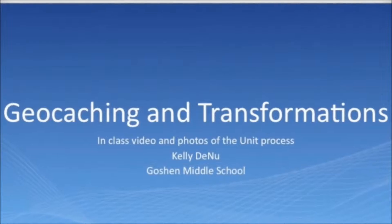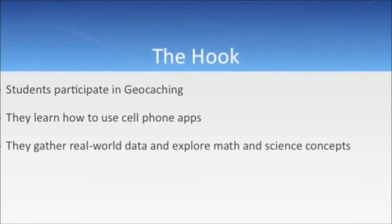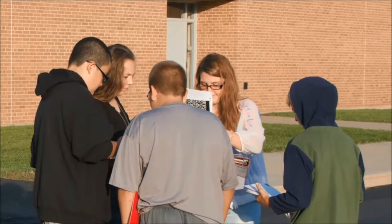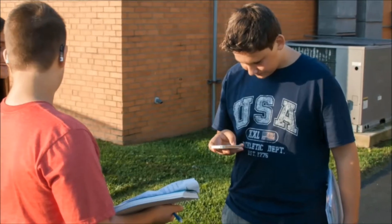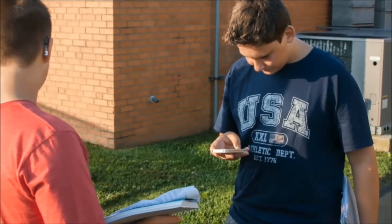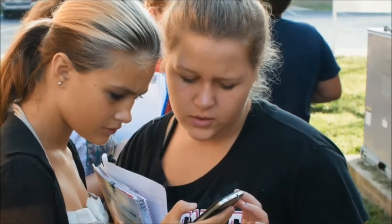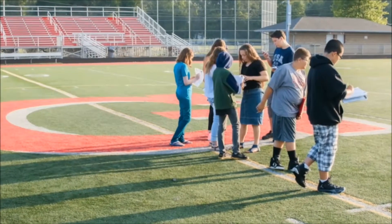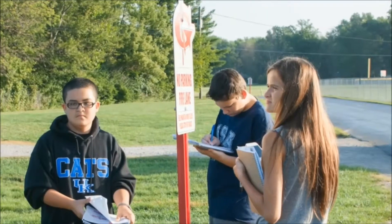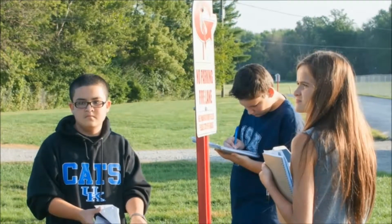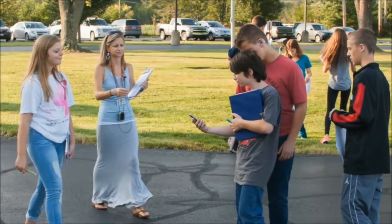This unit covers transformations, which is a math expectation for eighth graders, using geocaching as a hook. The challenge requires students to make a coordinate grid using reflections, rotations, and dilations of a polygon to map locations. Students used their own cell phone devices to navigate around the school using GPS to various places on campus where the teacher hid virtual treasure. The challenge itself involved the Secret Service finding the president by decoding a map using transformations. Students used their coordinate grids, prepared by other teams, and geocaching to succeed.